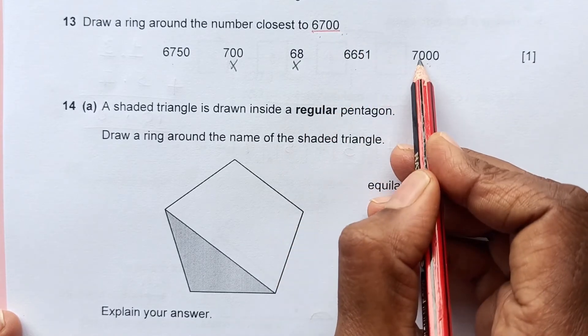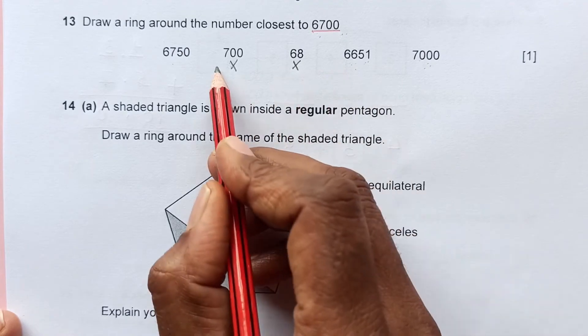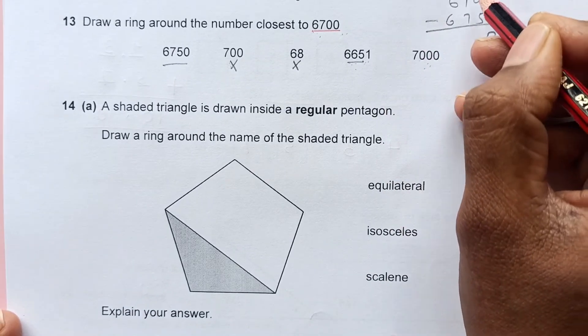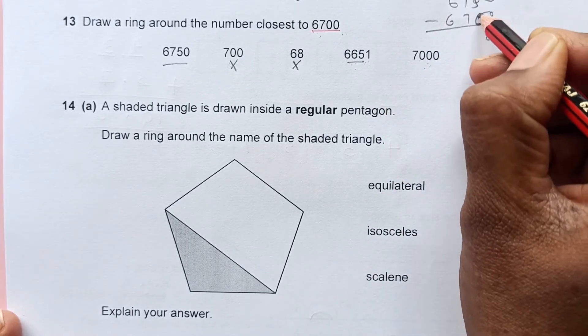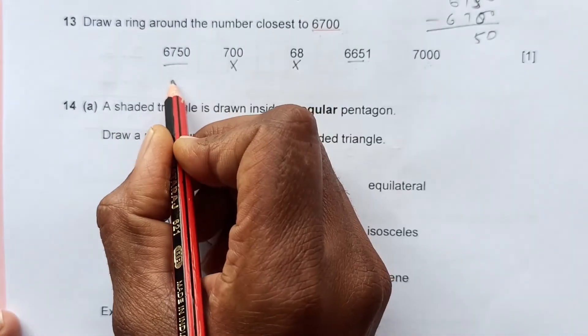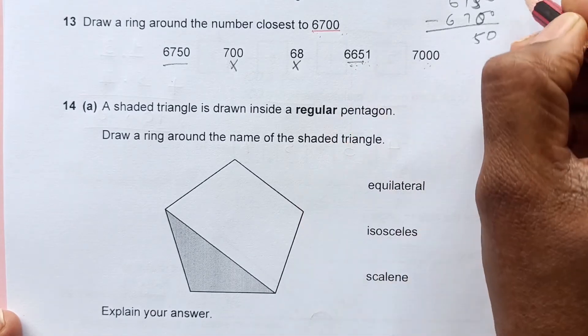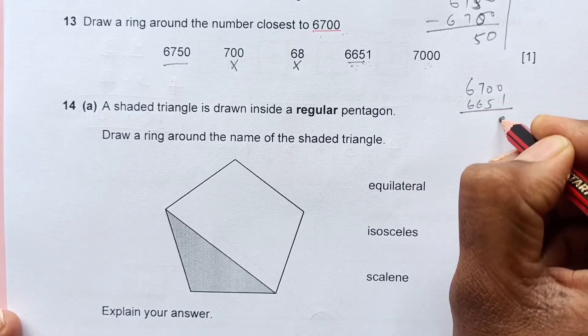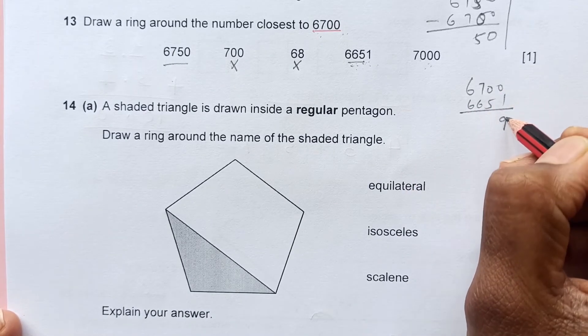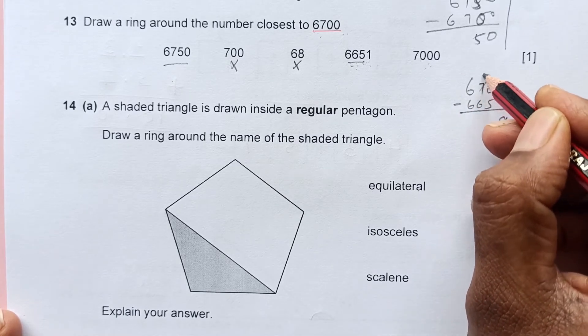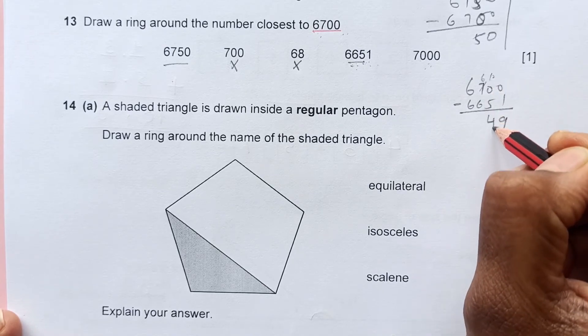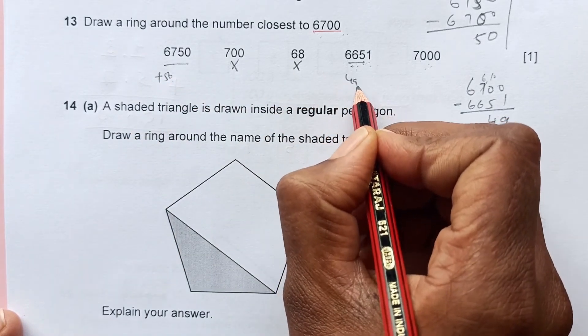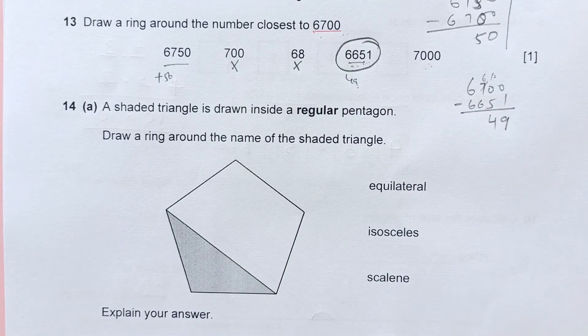We have 6,700. All these numbers, this difference is 300. These two are nearby, so we can count: 6,700 and 6,750. The difference is 50 here. And 6,700, the difference is 49. So the difference here is 50 and here is 49. So this one, 6,649, is the closest to 6,700.